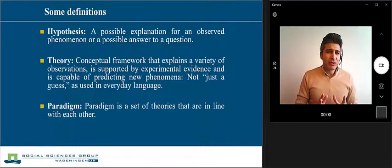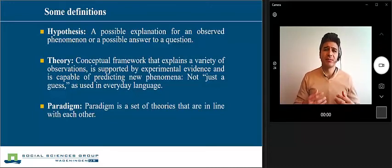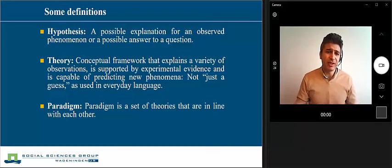There are also some definitions that I would like you to know because these definitions are used quite a lot when we do scientific activities. For example, hypothesis—it's a guess or a possible explanation for an observed phenomenon. Theory is a conceptual framework that explains a variety of observations, so it's not a guess anymore, it's something real that has been confirmed. And paradigm is a set of theories that are in line with one another.